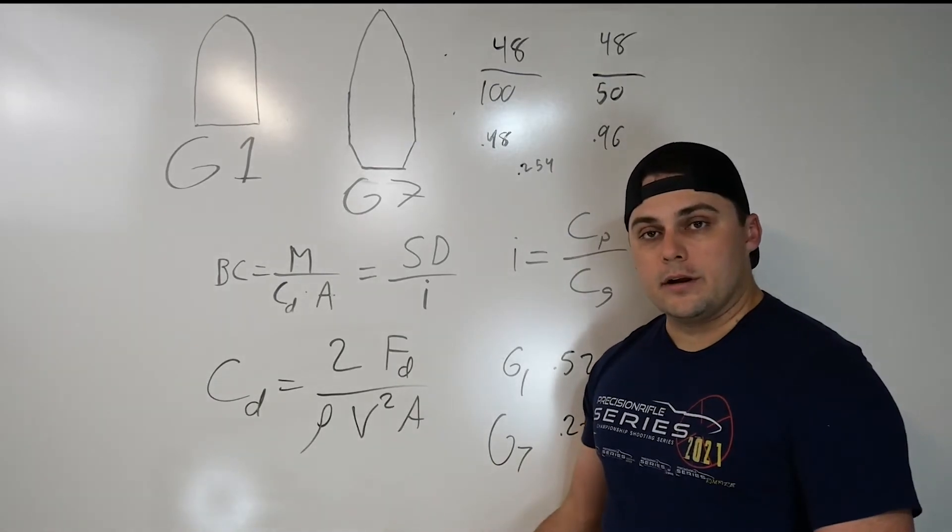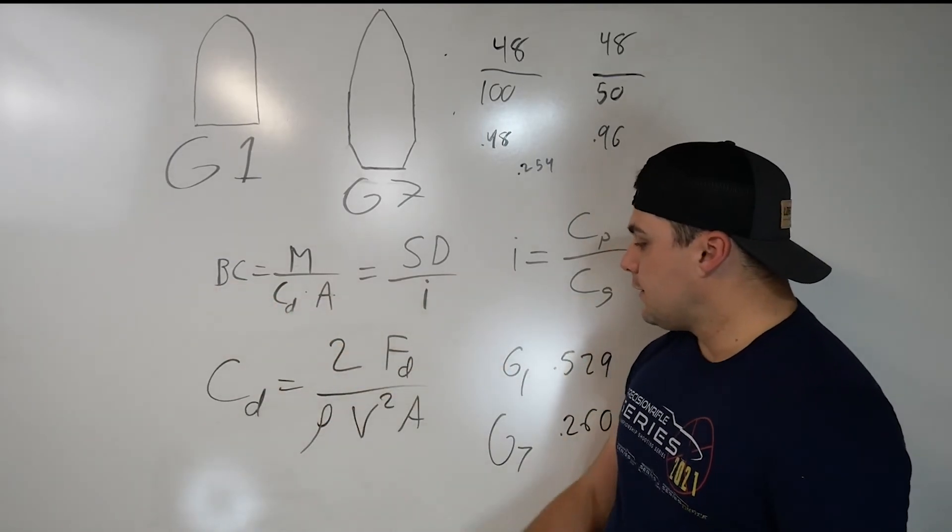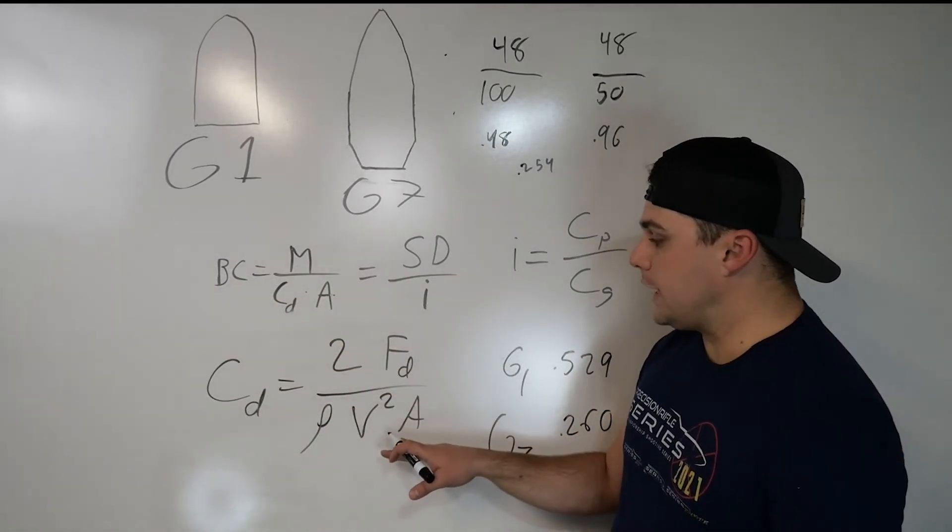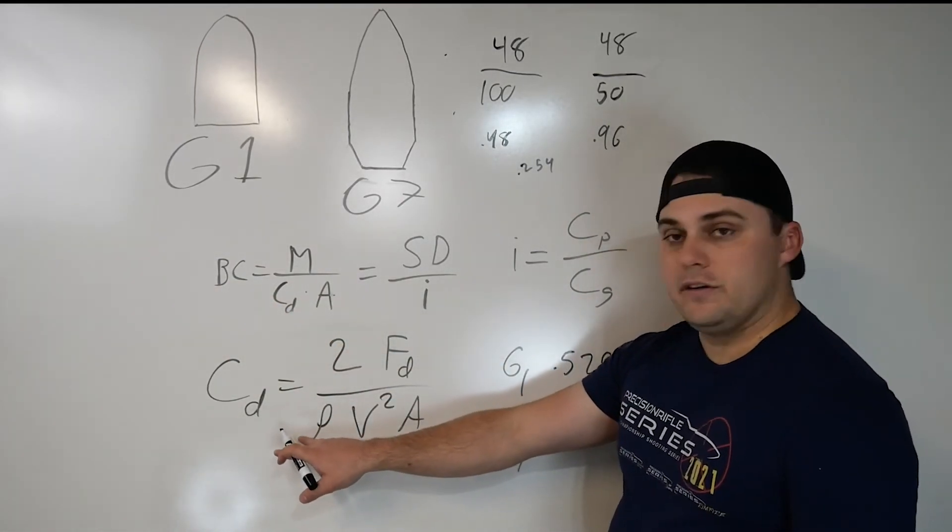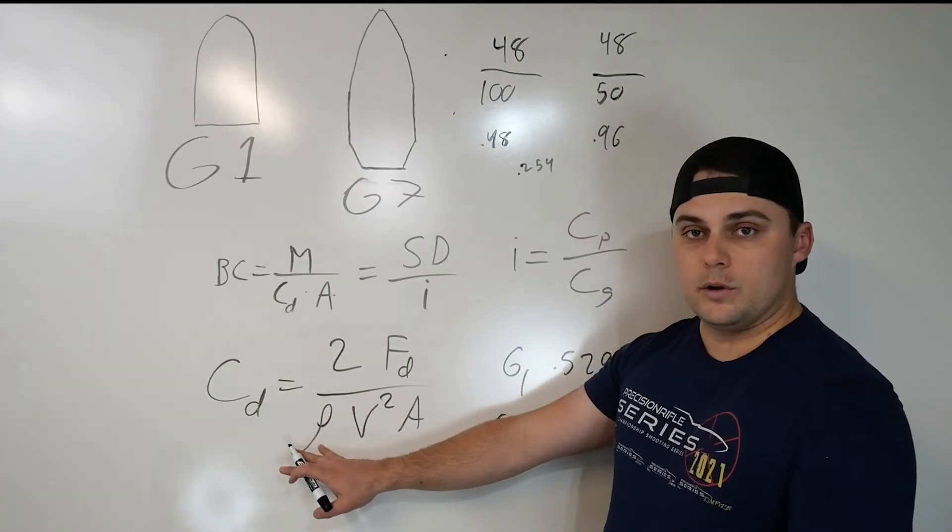So, when you're using a ballistic calculator and a ballistic solver, this is the reason they need the ballistic coefficient, the velocity, the caliber, and typically the elevation and humidity to get the air density of the location you're at.